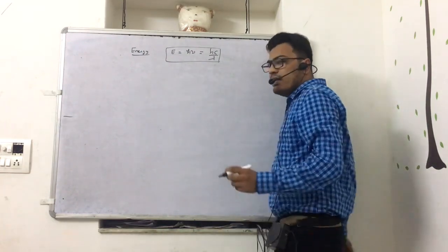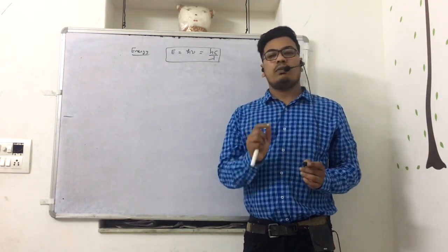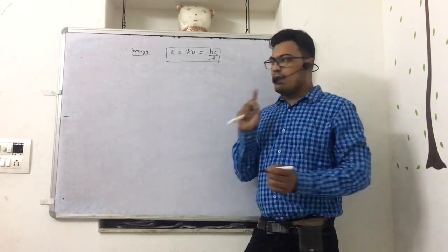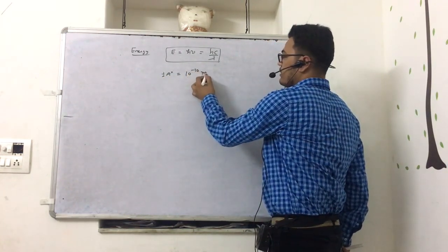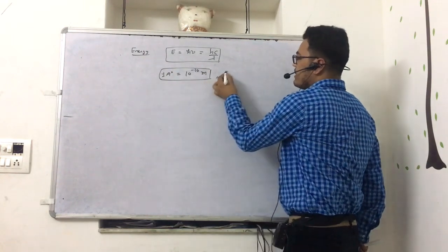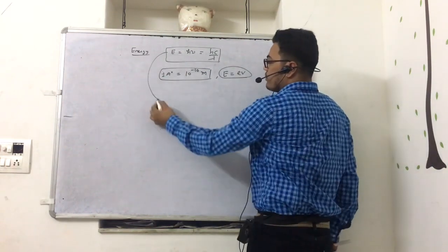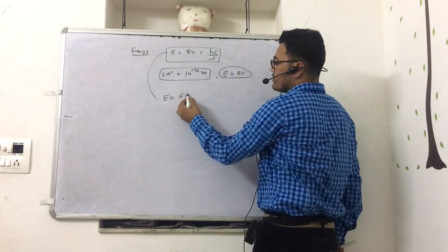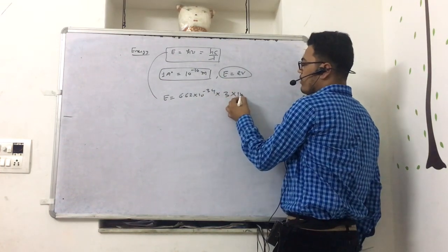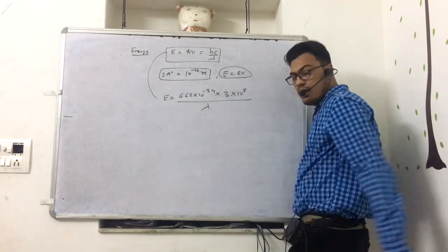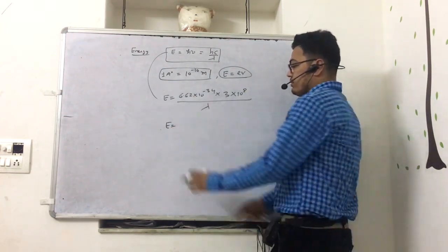Generally, what happens is that the electromagnetic wave has a wavelength in Angstroms. One Angstrom is 10⁻¹⁰ meters. Energy is generally in Electron Volts. Now, with H value substituted, E = hC/λ. Using h = 6.6 × 10⁻³⁴ and C = 3 × 10⁸, let's solve this for the given wavelength.